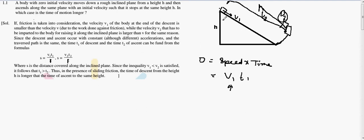The distance will remain the same in both cases along the inclined plane. Since the velocities are unequal, which velocity will be greater for ascent or descent?